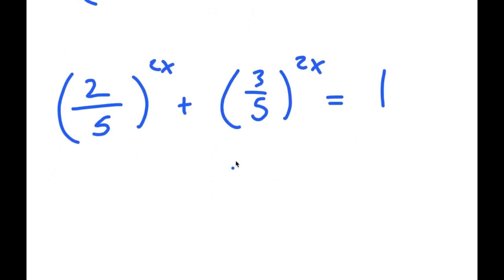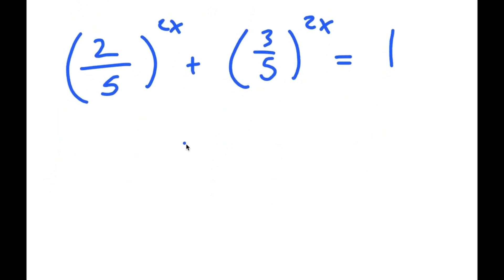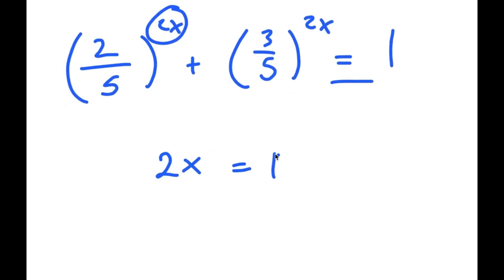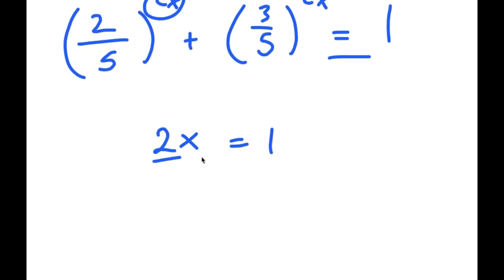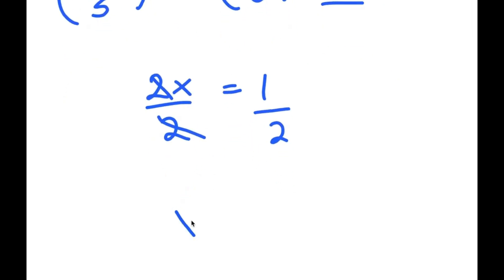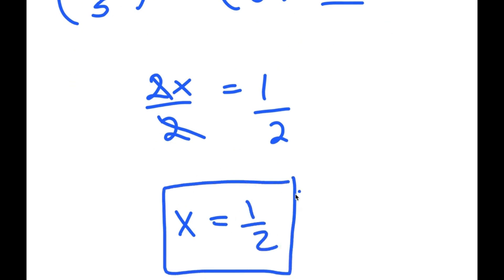And this means that 2x is equal to 1, so now if I divide both sides by 2, I get x is equal to 1 half. So this is my solution.